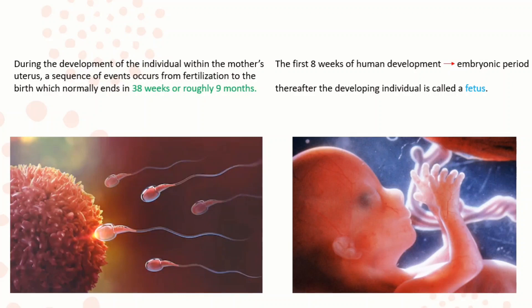Growth of a new human being starts when an ovum is fertilized by a sperm, and this usually happens in the oviduct. During the development of the individual within the mother's uterus, a sequence of events occurs from fertilization to birth. This normally ends in 38 weeks or roughly 9 months. The first 8 weeks of human development is known as the embryonic period. Thereafter, the developing individual in the uterus is called a fetus.